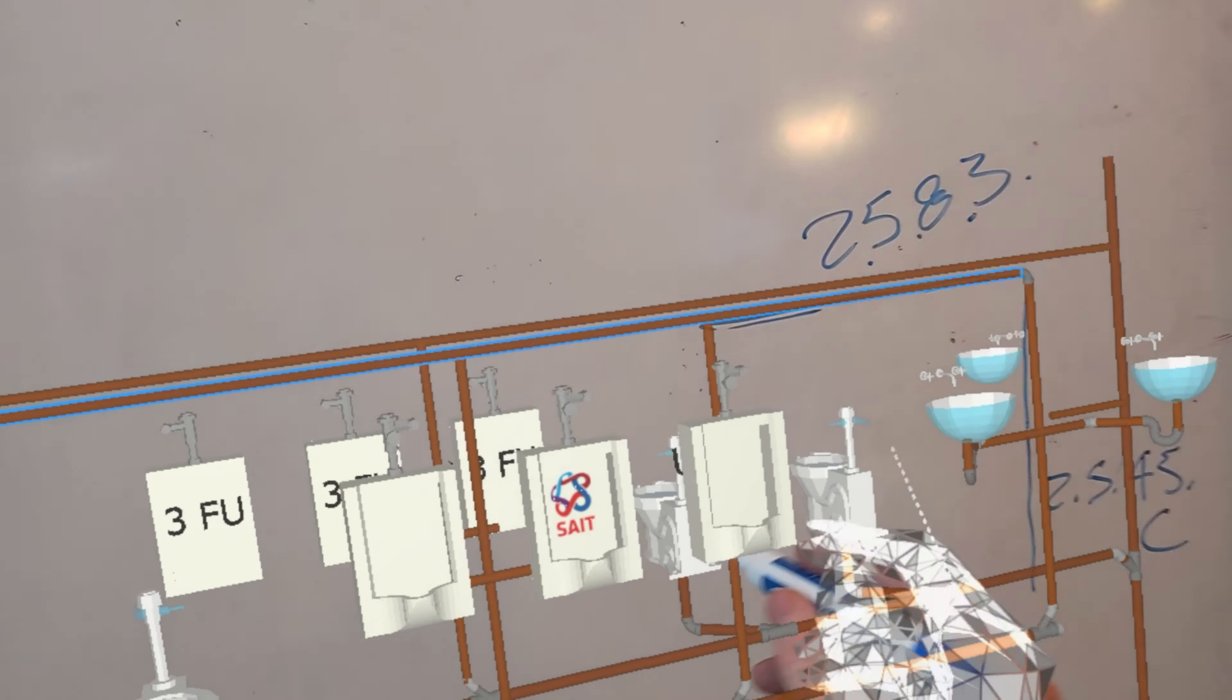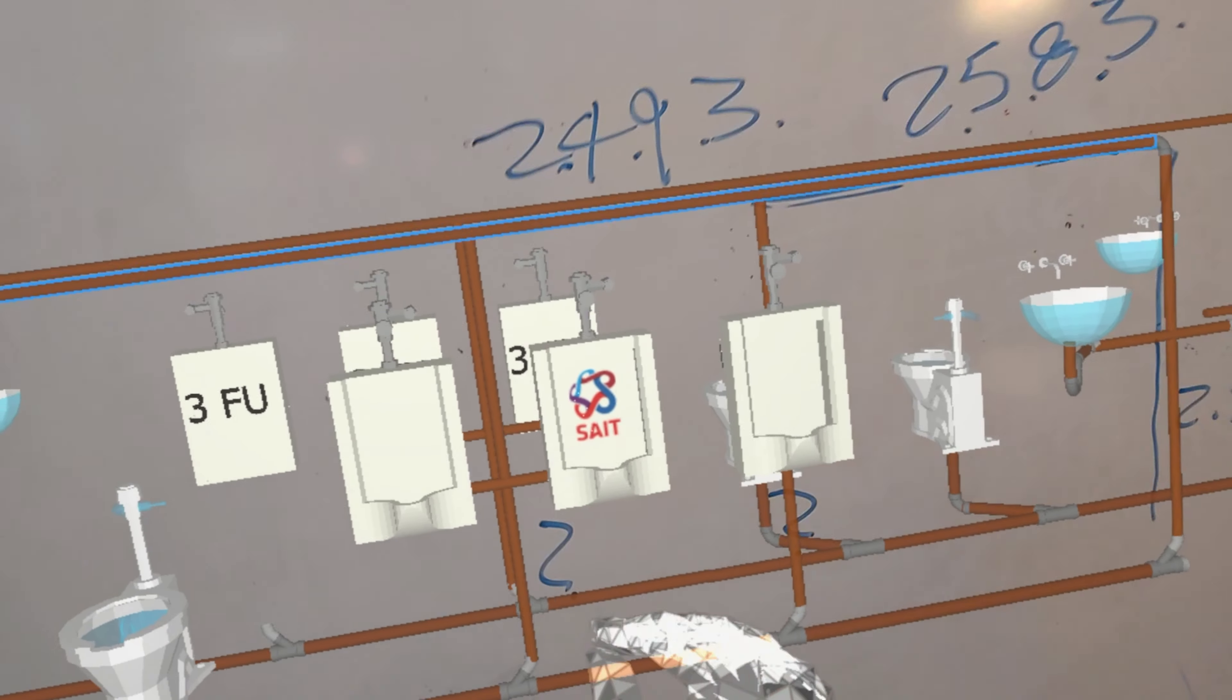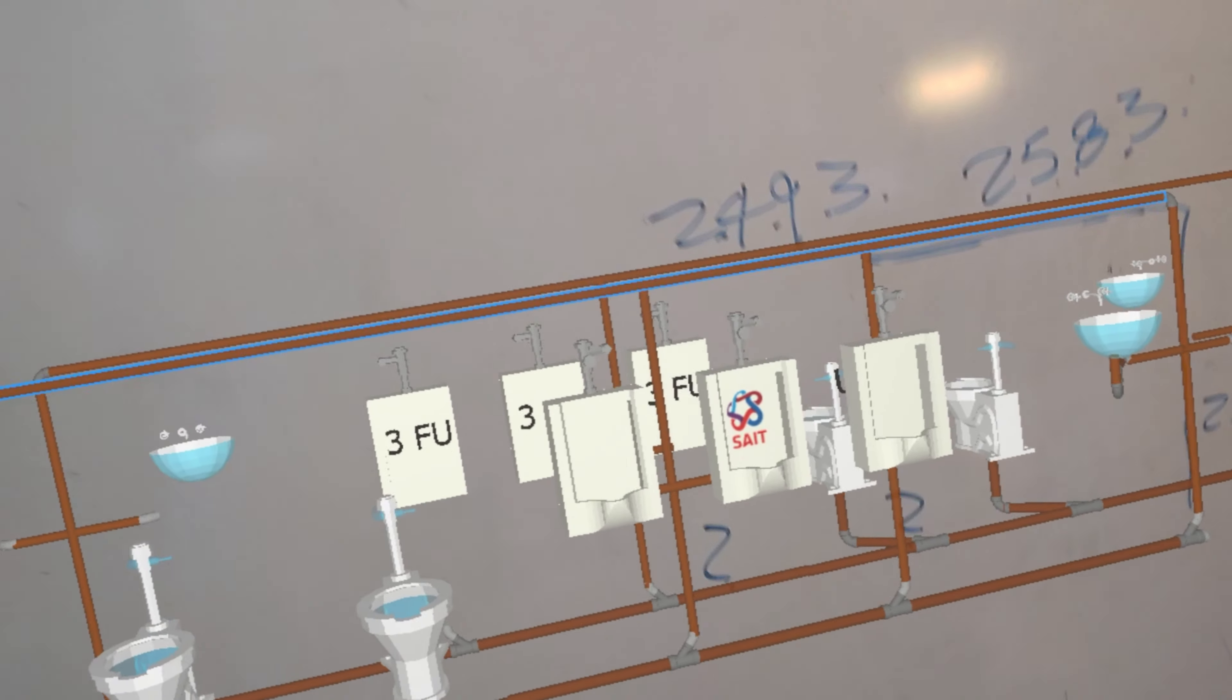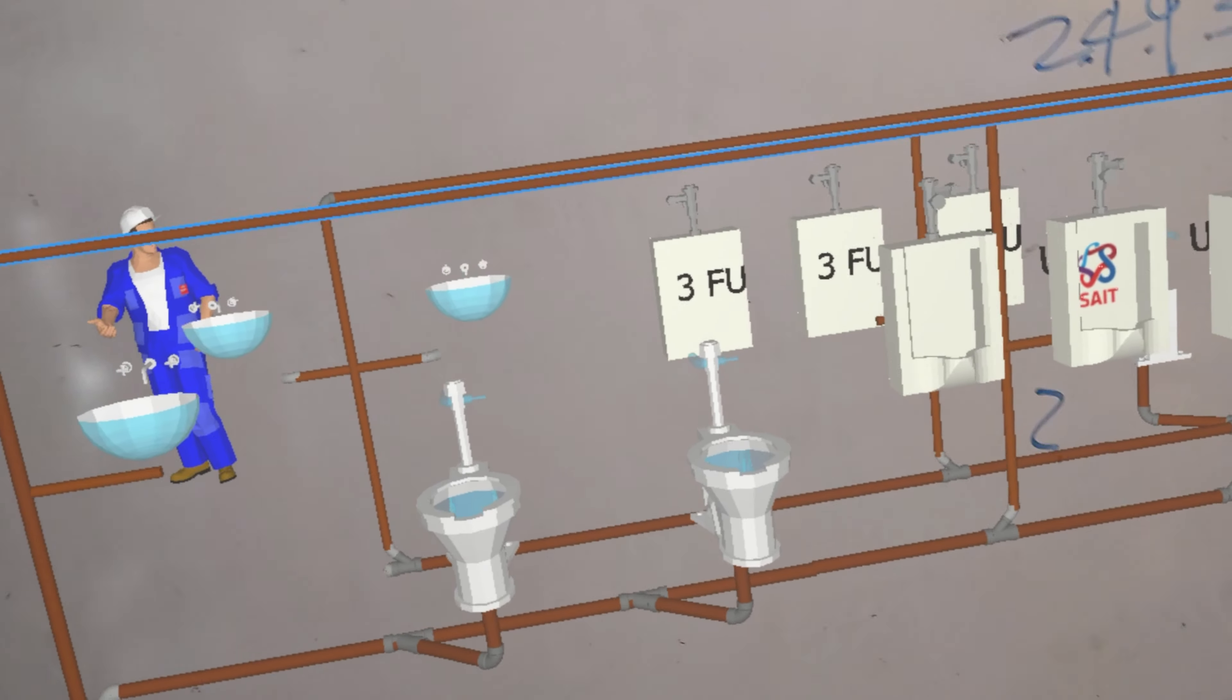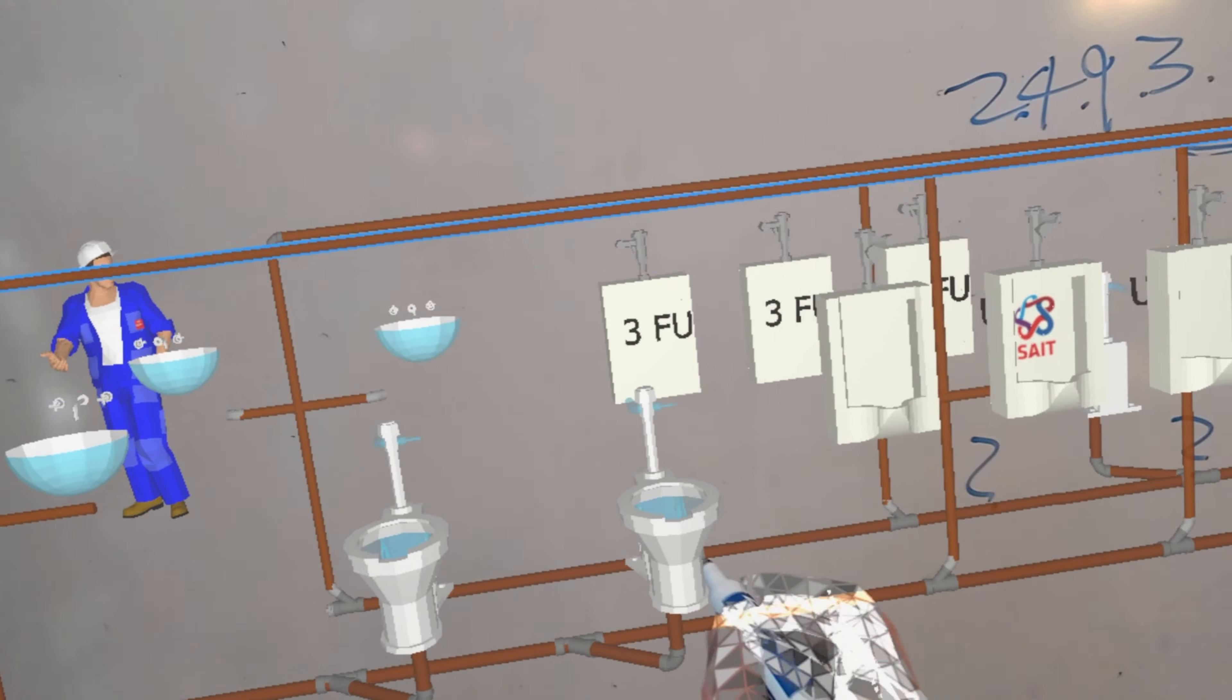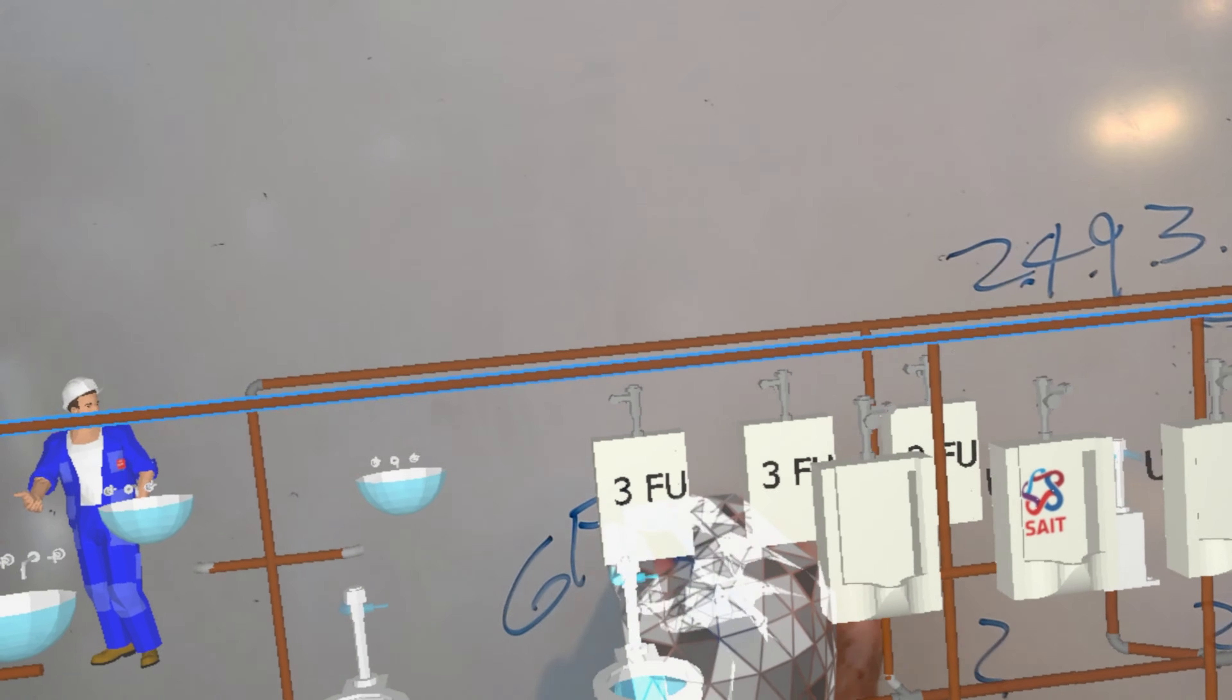And then of course you'd have to figure out the sizes of these two branches. Or this is a branch and this is a fixture drain. So we want to know what they are too in the circuit vent and branch. And then of course at the end we have two flushometer toilets. How many fixture units is a flushometer toilet worth? Well we know they are worth six FUs.